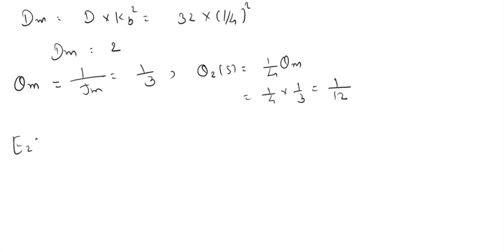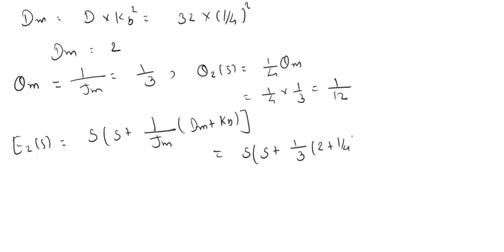The output will be given by S plus 1 by Jm, the other way Dm which is given by Kb. So this will be S plus 1/3 times 2 plus 1/4, which comes out as E2(S) equals S times (S plus 0.75).